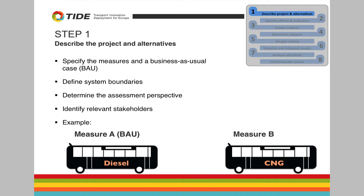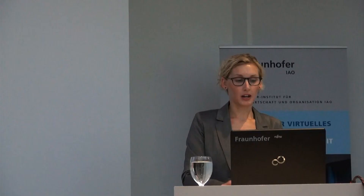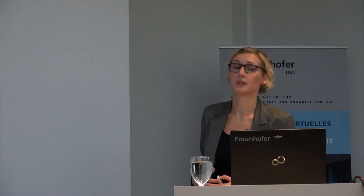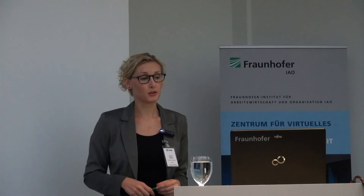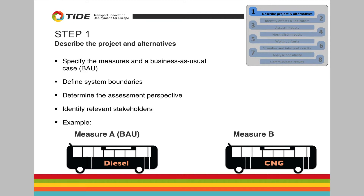The first step seems rather simple, but it's very important: describe the project and alternatives. For instance, you need to specify the measure and also the alternative — here, the business-as-usual case. As an example for this presentation: a city has a quite old fleet of diesel buses and needs to buy new buses. They can either go again for diesel buses, or they saw in another city that CNG buses are an option. The diesel buses would be the business-as-usual case — they still need to invest, but continue with their usual activities.